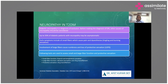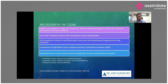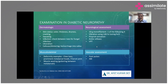To assess small fiber function, use pinprick and temperature sensation tests. Large fiber function is assessed by vibration and the 10-gram monofilament. The 10-gram monofilament test is essential for evaluating protective sensation — a very simple and important bedside test. Most patients will be asymptomatic, so it is critical to diagnose neuropathy before they become symptomatic. Once symptomatic, pain, numbness, and burning become the patient's recurring chief complaint every clinic visit.